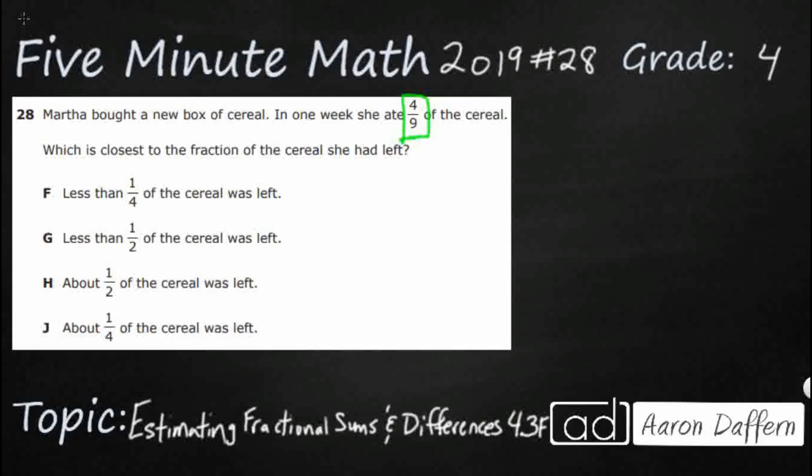So she had a box of cereal. We can just make a little strip diagram to figure this out here. So she had a full box. This is how much she ate. So she ate four-ninths, and this is how much she left.